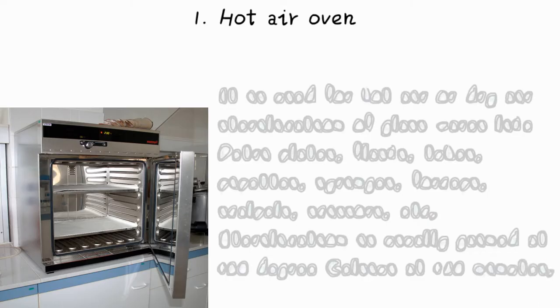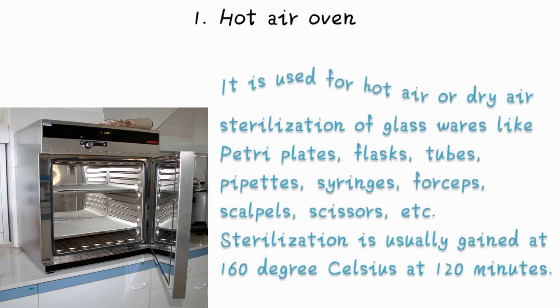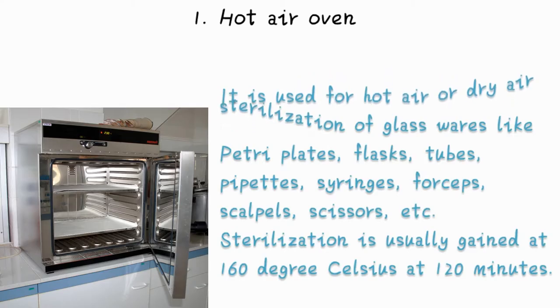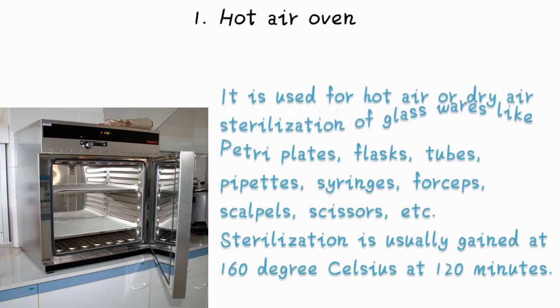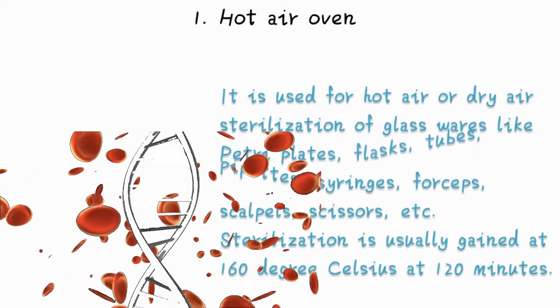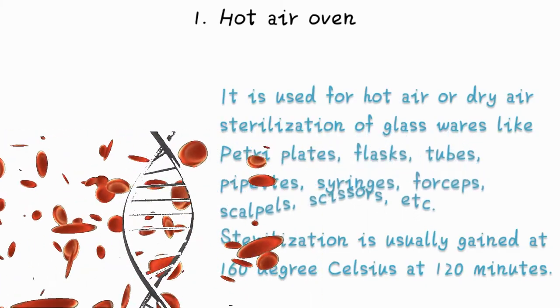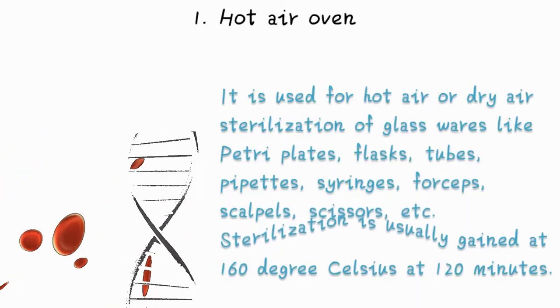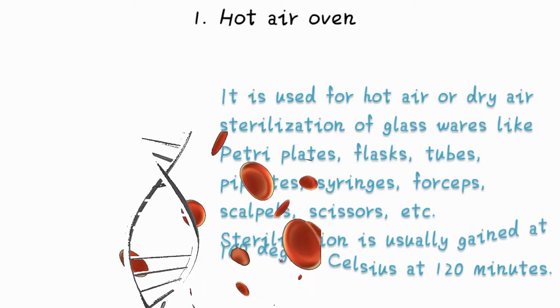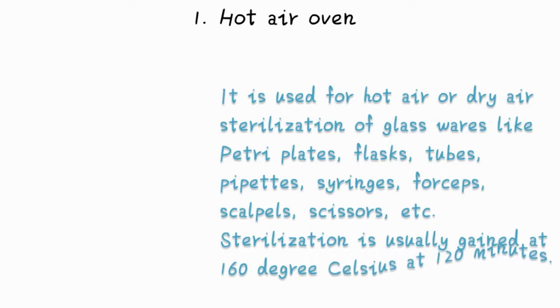Hot Air Oven. It is used for hot air or dry air sterilization of glasswares like petri plates, flasks, tubes, pipettes, syringes, forceps, scalpels, scissors, etc. Sterilization is usually gained at 160 degrees Celsius at 120 minutes.